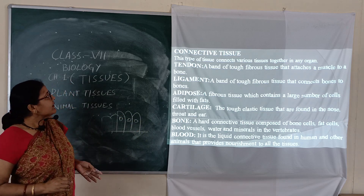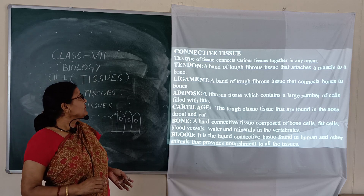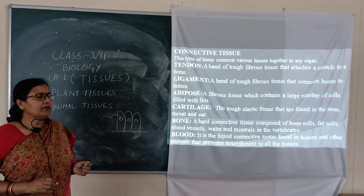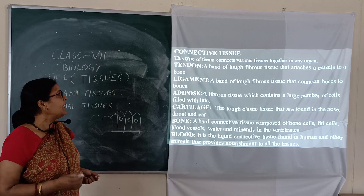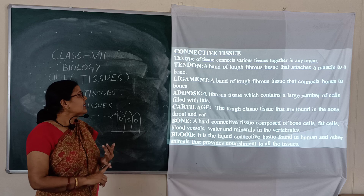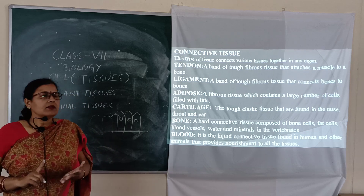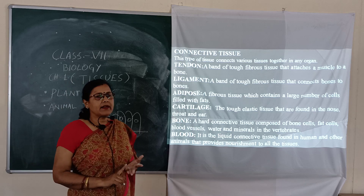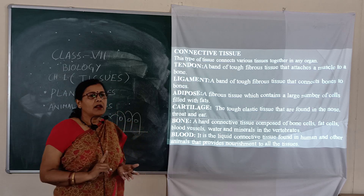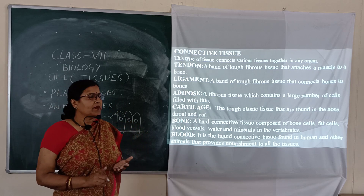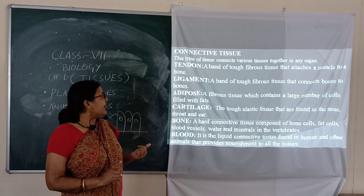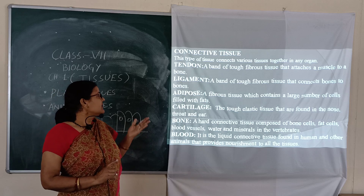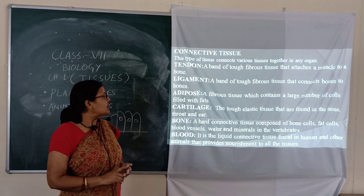Connective tissue connects many tissues together. Examples include tendon, ligament, cartilage, bone, blood, and lymph. Blood and lymph are liquid connective tissue, while bone, cartilage, and ligament are solid connective tissue. You can also see adipose tissue in the diagram.